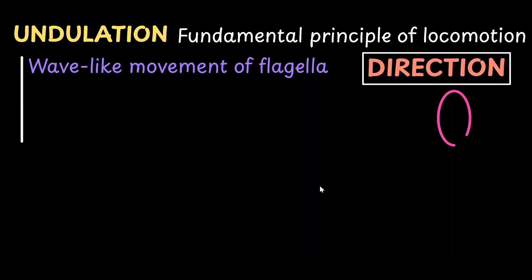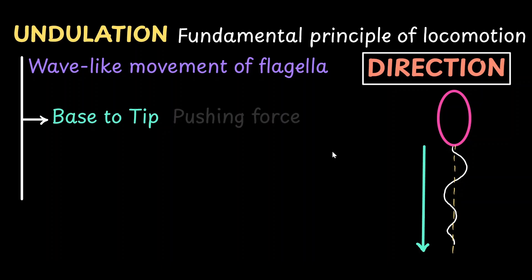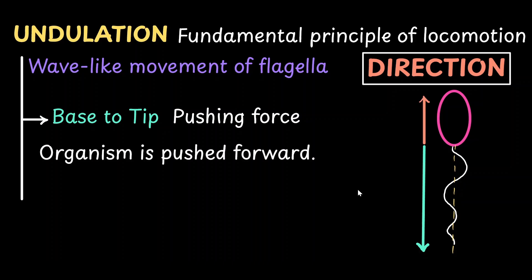The direction of the wave is going to help us determine how and where the organism is going to move. Undulation can be seen as two different types. In the first type, the wave movement is from the base of the flagella to the tip of the flagella. So this is similar to cracking a whip. When the wave starts at the base, it creates a pushing force which is actually pushing at the cell. And this causes the organism to be pushed in the forward direction.